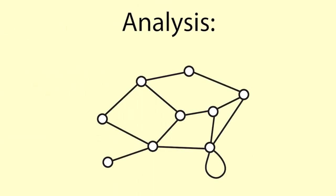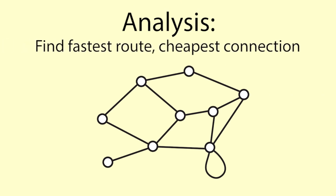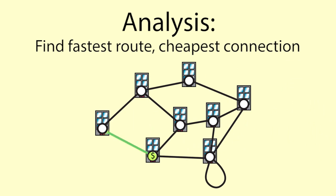Sometimes when we analyse a network, the weights are used to find out something about the network. For example, travel times might be used to find the fastest route between two nodes, while costs might be used to find the cheapest way to connect the neighbourhood with fibre optic cables.